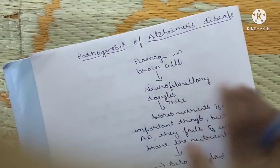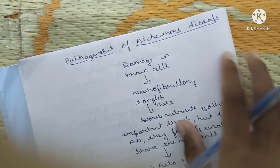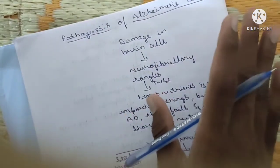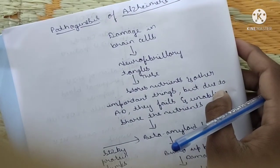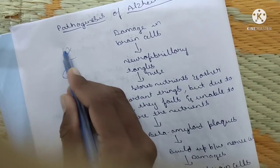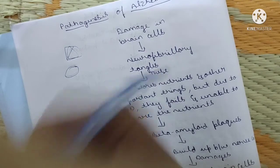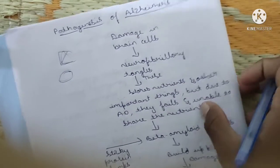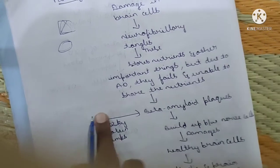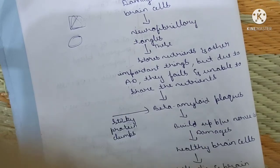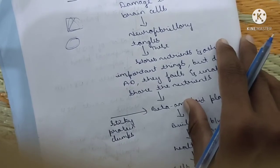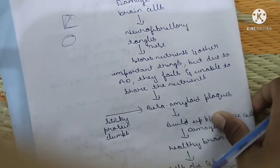Let's start the pathogenesis of Alzheimer's disease. Alzheimer's is a central nervous system disorder. The first pathogenesis is damage in the brain cells. This disease causes two damages: neurofibrillary tangles — tangle-like structures where the neurons get twisted into fibrillary tangles — and the cells fail to store nutrients or excrete waste materials.